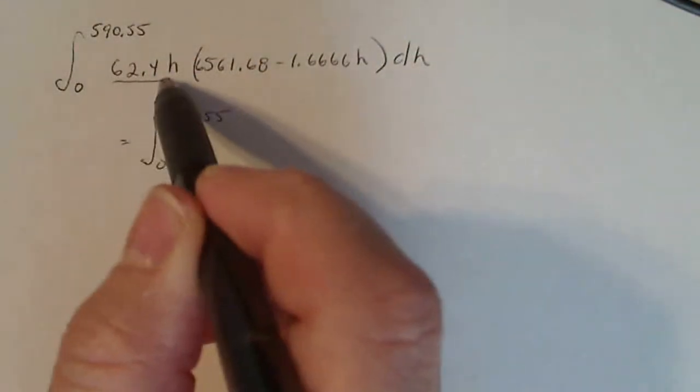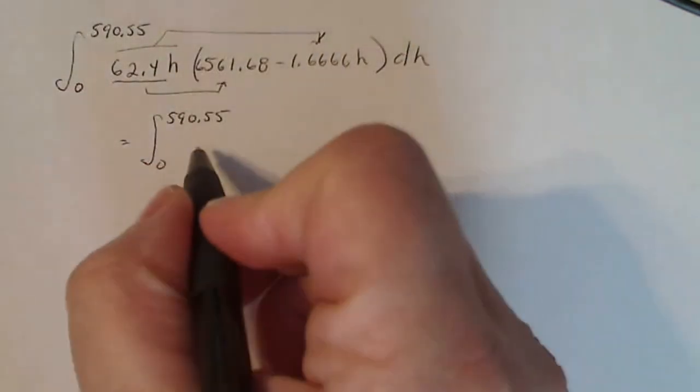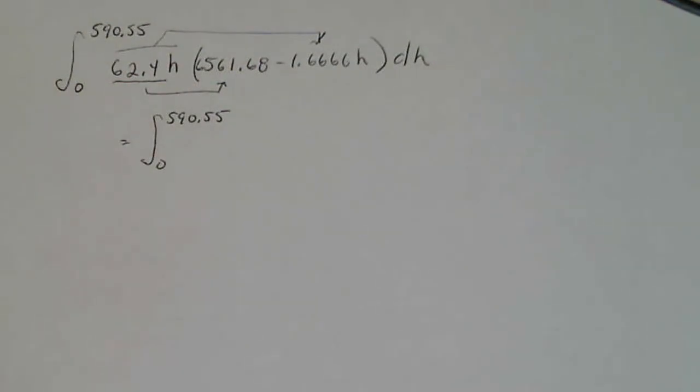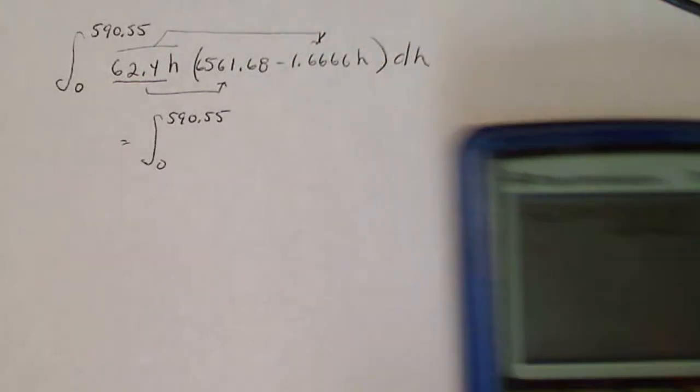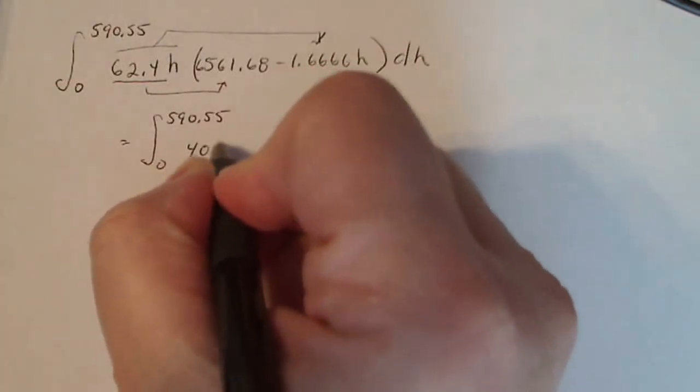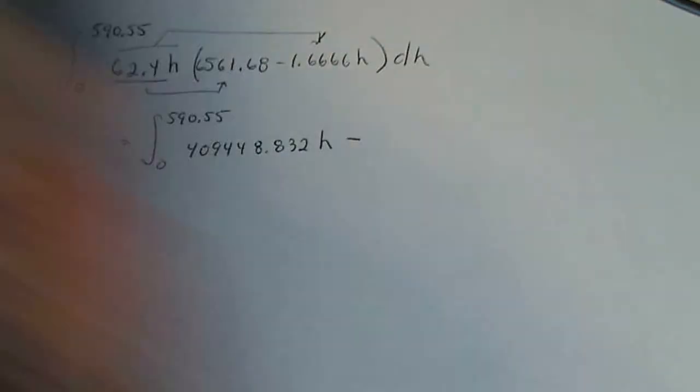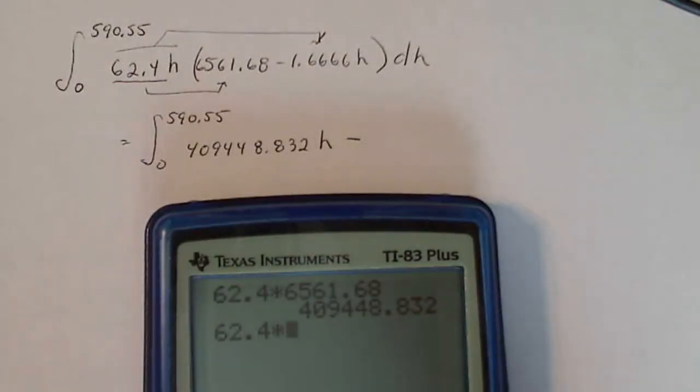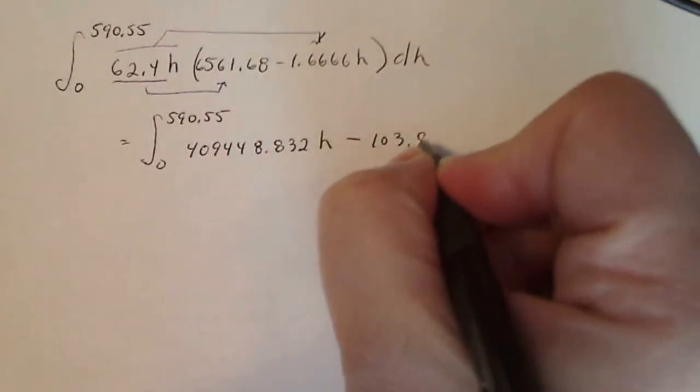So what I'm going to just do is distribute this guy to each piece here. And he's going to be multiplied by there and he's going to be multiplied by here. So I'll take my trusty calculator and I do 62.4 times 6561.68. And I get this lovely number, 409448.832, H minus 62.4 times 1.6666, 103.99. So that's 103.9958.